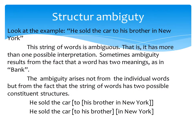Number three, structural ambiguity: look at the example 'he showed the car to his brother in New York.' This string of words is ambiguous — it has more than one possible interpretation. Sometimes ambiguity arises because a word has two meanings, as in 'bank.' Here, the ambiguity arises not from individual words but from the fact that the string of words has two possible constituent structures: first meaning — he showed the car to his brother [who was] in New York; second meaning — he showed the car [that was] in New York to his brother.